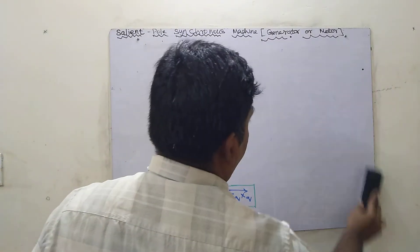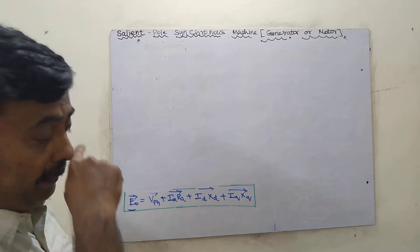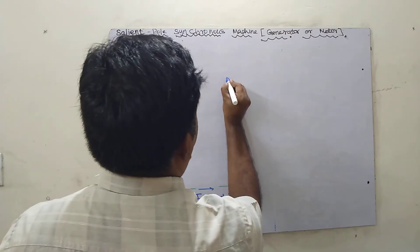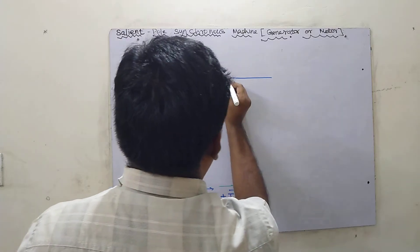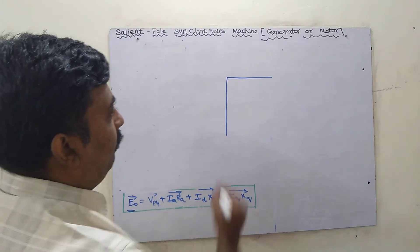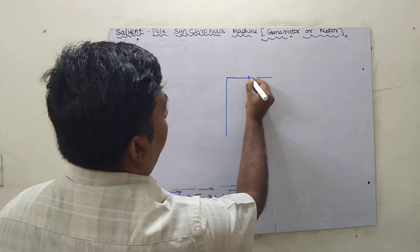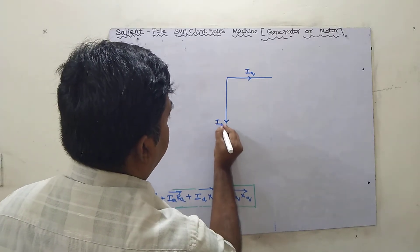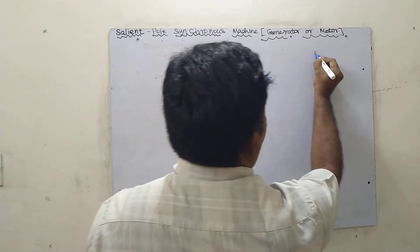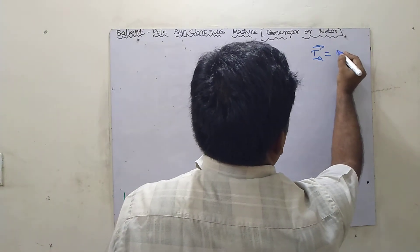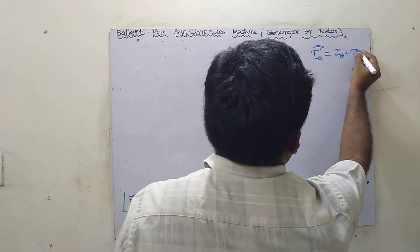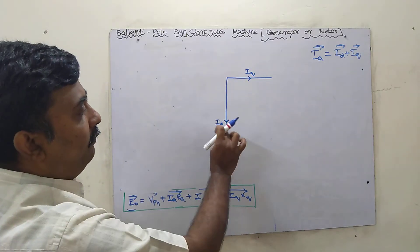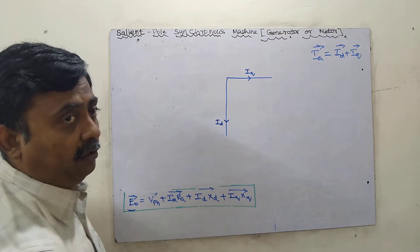For the phasor diagram, we need to draw ID and IQ. Taking a reference axis, IQ will be very small in magnitude and ID will be larger. According to Blondel's two-reaction theory, IA is divided into ID plus IQ. The axis along which IQ lies is the E0 axis, since IQ is in phase with E0, while ID is perpendicular to E0. Adding ID and IQ vectorially gives IA.